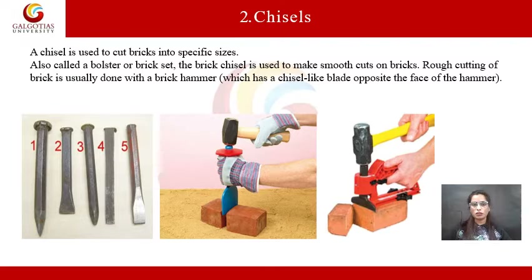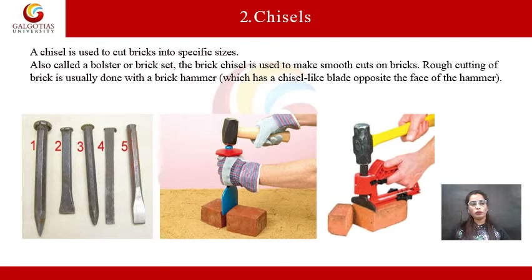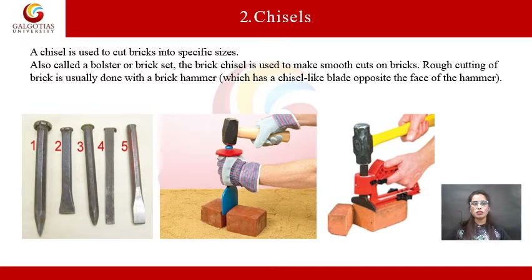The next brick masonry tool is the chisel. Here you can see different types of chisel in these images. Basically, a chisel is used to cut bricks into specific sizes — also called a bolster or brick set. The brick chisel is used to make smooth cuts on brick during wall construction. Rough cutting of brick is usually done with a brick hammer which has a chisel-like blade opposite the face of the hammer. These are some types of chisels used for cutting brick edges during construction.